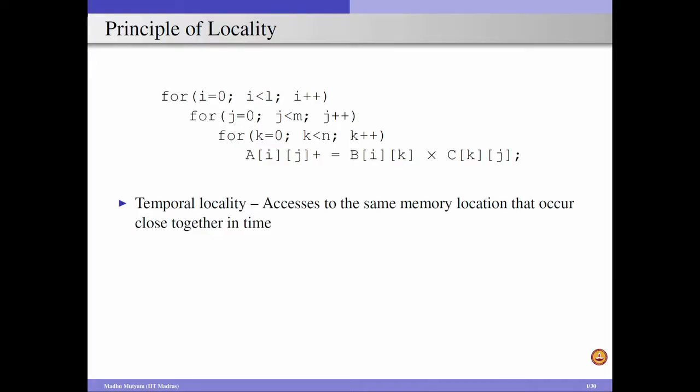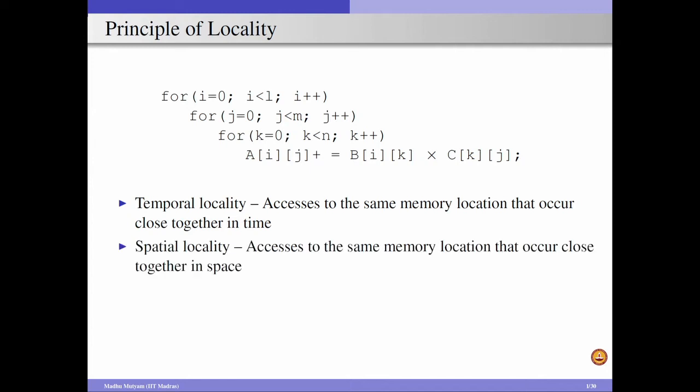This says that an element of array A when accessed now is going to be accessed again in the near future. This is true for the elements of the other arrays also. From this example it is clear that the elements accessed now have a high chance of being repeatedly used in the near future, or elements neighboring the previously accessed elements will be required in the near future. The principle of locality can be exploited either in time or in space. Accesses to the same memory location that occur close together in time is called temporal locality, whereas accesses to the same memory location that occur close together in space is called spatial locality.